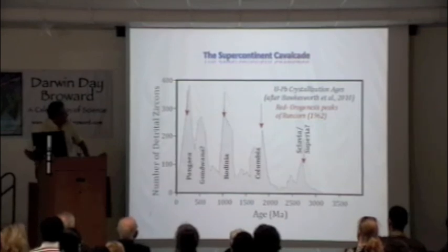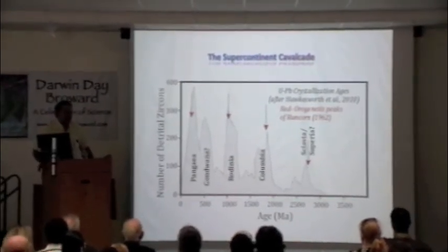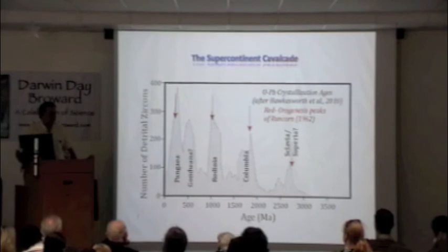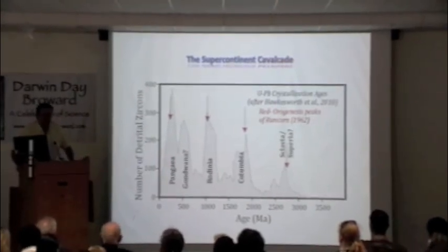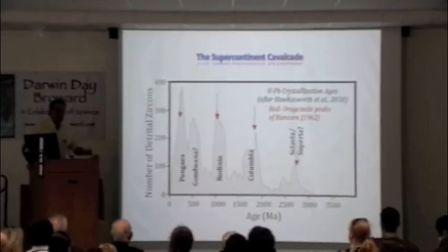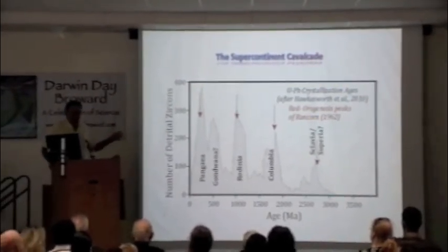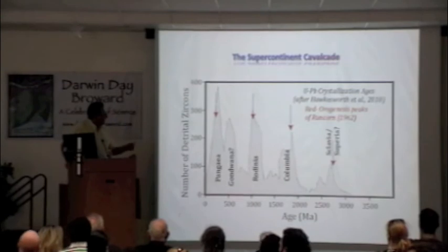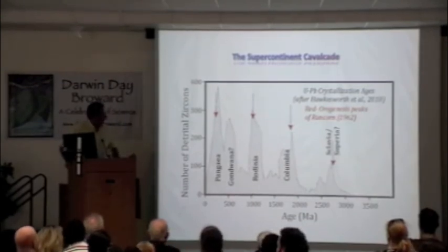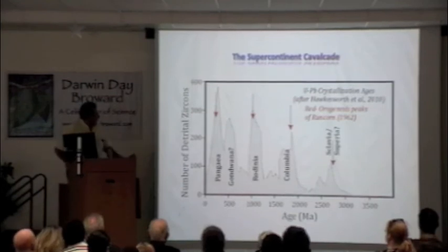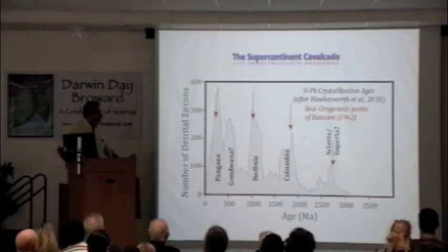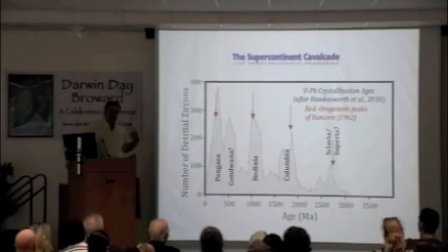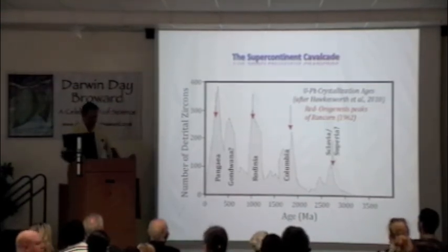When we think about supercontinents, this refers to a period in Earth history when 75% or more of the present crust is assembled into one large landmass. This was hypothesized in part by looking at uranium-lead zircon ages — just a histogram of these from 1962 by Runcorn, updated in 2010, which really hasn't changed much. You can see a number of supercontinents identified: Slavia, Superia (still somewhat in debate), Columbia, Rodinia, Gondwana, and Pangea — and there are hints that there might be a supercontinent in the future.